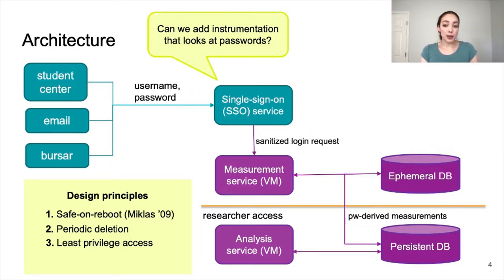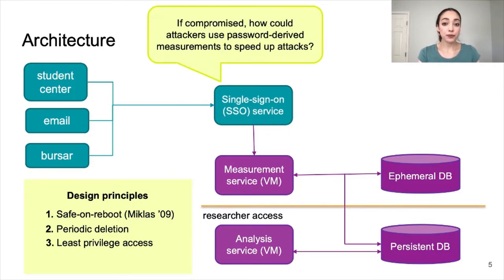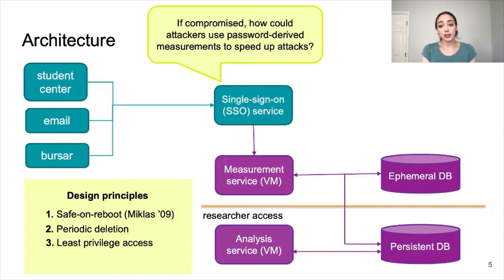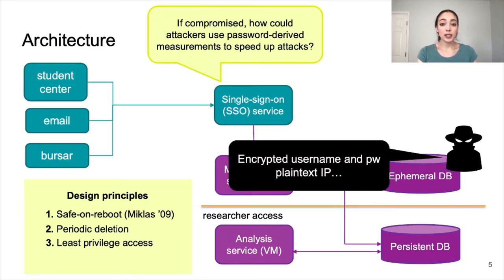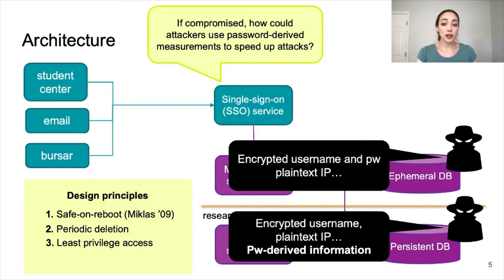However, in the unlikely event of a compromise, it's important that the measurement data not reveal too much information about users' actual passwords, because the attacker could use these measurements to speed up a guessing attack. So if compromised, how could attackers use password-derived measurements to speed up attacks? If the attacker gains long-term access to the measurement service, it is equivalent to compromising the SSO service itself, where the attacker can monitor the passwords as users log in. So instead, we focus on the smash and grab attacker, which steals the stored data in Gossamer. If the attacker steals the ephemeral data, they learn nothing as the key is deleted on reboot. If the attacker steals the persistent database, though, they will gain access to the password-derived information. So we need to ensure that the potential benefit of these measurements is bounded, and we call this design principle bounded leakage logging.